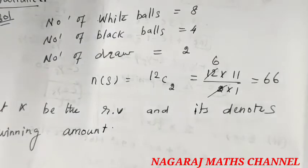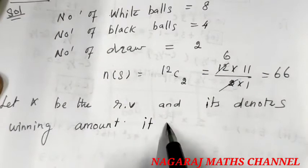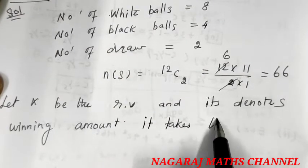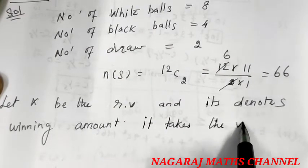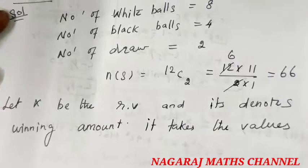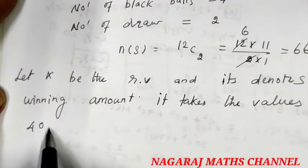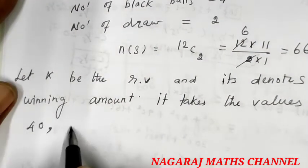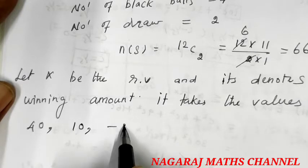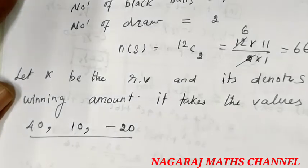This is the winning amount X. It can take the values plus 40 rupees, 10 rupees, and minus 20 rupees.